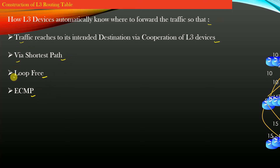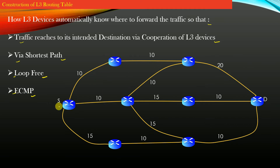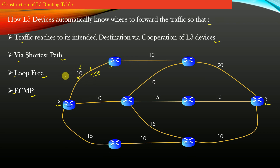Let us understand these four points with a sample network topology. You have a source device and a destination device. The links in this topology are marked with integer numbers — these are the costs of going from one device to another. These numbers are called the metric of the link. The network administrator configures these metric values so they can control which path the traffic should take from source to destination.